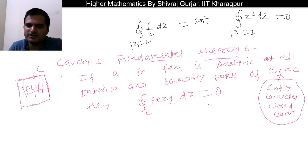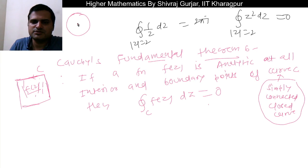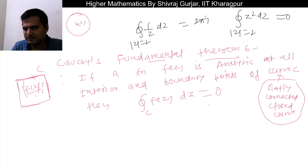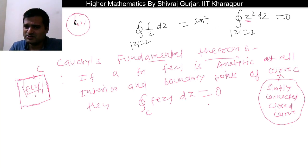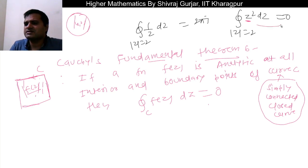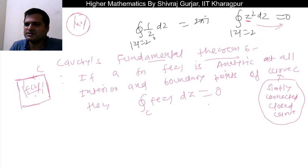Consider f(z) = 1/z on the contour |z| = 2. At z = 0, which lies inside the contour, 1/z is not analytic. However, z² is a polynomial and is analytic everywhere. So for z², we can apply Cauchy's Fundamental Theorem within the domain |z| = 2, and the integral is zero.